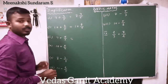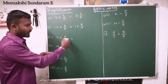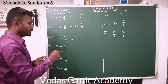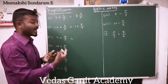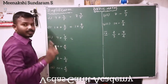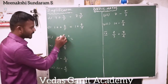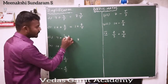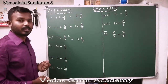Next, third example: 7 plus 5 by 3. Here 5 by 3 is an improper fraction. So what you are supposed to do? You just find how many 3s are there in 5. There is only one 3, and the remaining is 2. So you can add 1 plus 7 to get 8, then write the remainder 2 by 3. That's all.